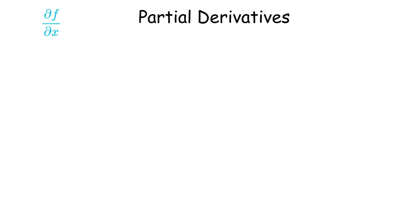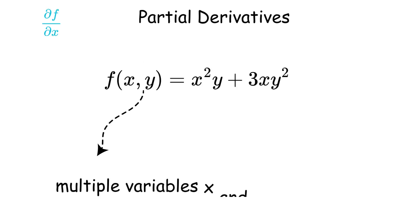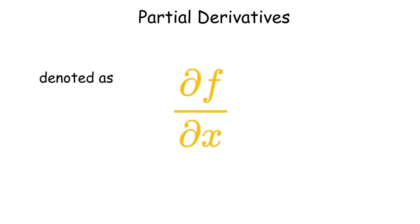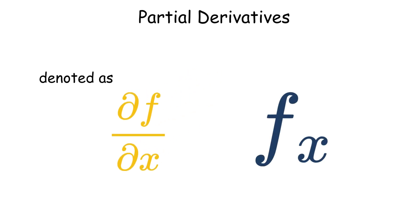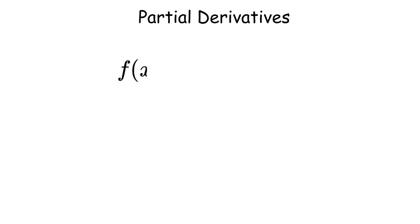Partial derivatives apply to functions of multiple variables, measuring the rate of change with respect to one variable while holding others constant. They are denoted as partial f over partial x, or f sub x. For a function f of x and y, the partial derivative partial f over partial x treats y as a constant.